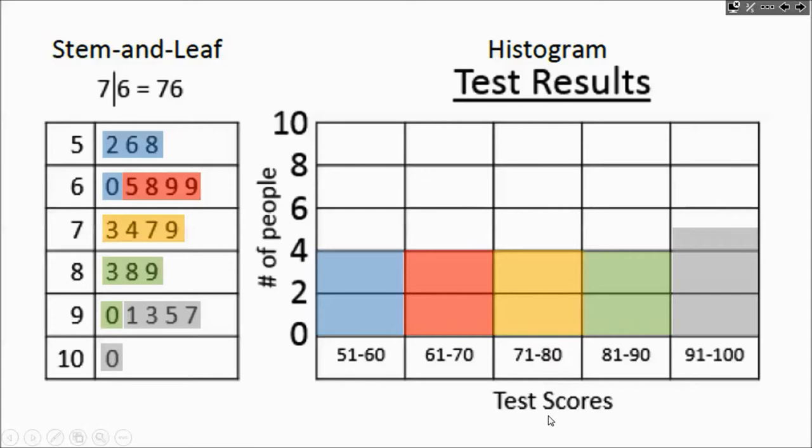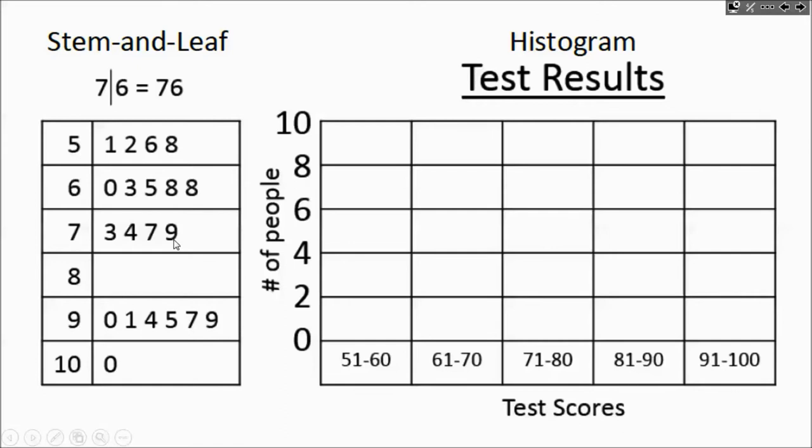Moving on. Hopefully you're catching on to these. Two more examples. We have the stem and leaf plot over here and we're going to display it in the histogram. 51 to 60. We've got these four and one more. It's a total of five.